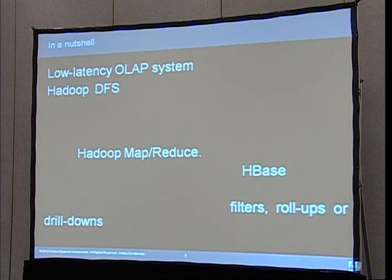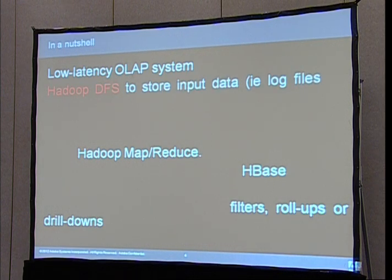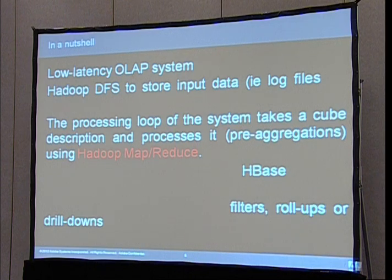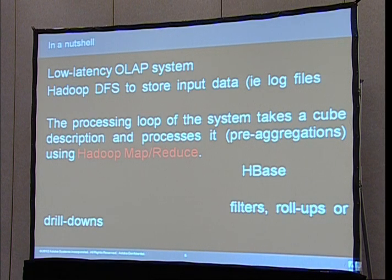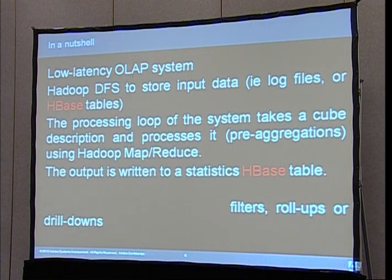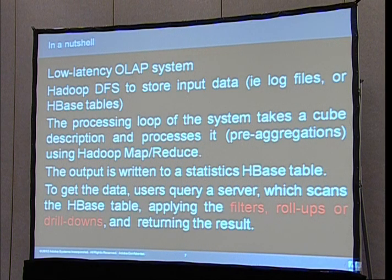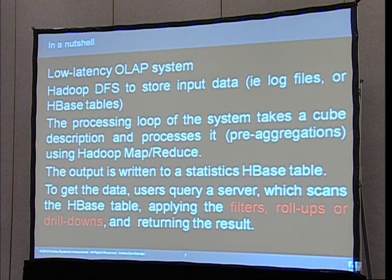In a nutshell, we have this low-latency OLAP system which uses Hadoop DFS to store input data like log files. The processing loop of the system is built using MapReduce jobs, which take a cube description and process it by pre-aggregation, storing the results into a statistics output HBase table. Afterwards, users interact with the system by querying a server, which scans these HBase tables, applying filters, roll-ups, drill-downs, and any kind of simple OLAP operations, and returning the result.